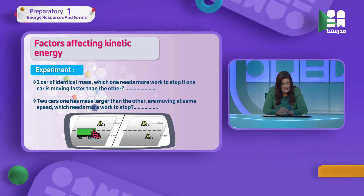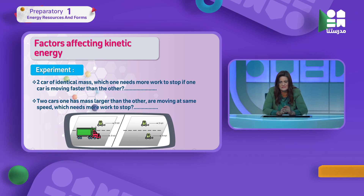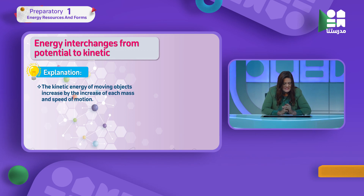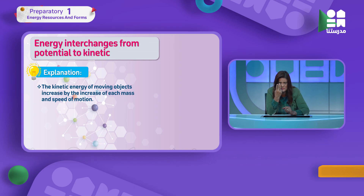Similarly, if two cars have different masses but move at the same speed, which needs more work to stop? The one with the larger mass. For example, a truck versus a small car — the truck is much harder to stop because it has greater mass. So the kinetic energy of a moving object increases by increasing both mass and speed.